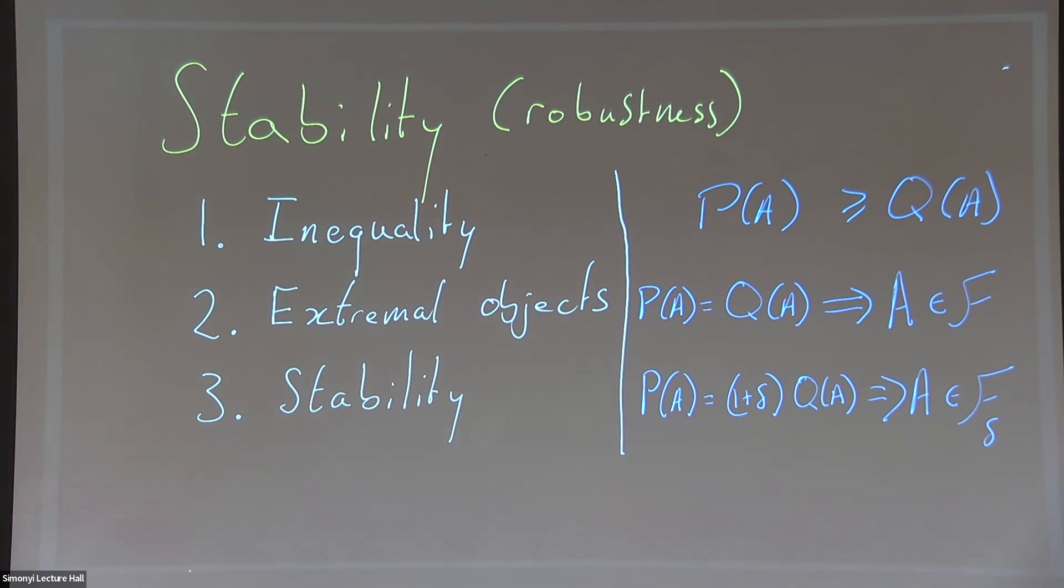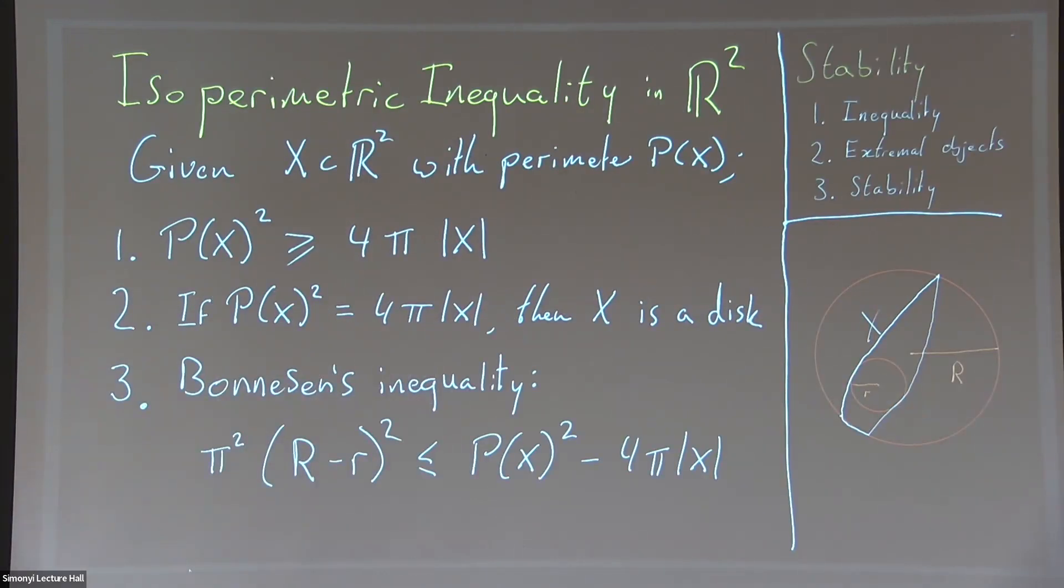Let's consider a specific example: the isoperimetric inequality in the plane. It asks, if I give you some area, what shape minimizes the perimeter? There's a nice expression for this—the answer is a disk, that's the best shape. So I find the extremal result: if I have minimal boundary, I must be a disk.